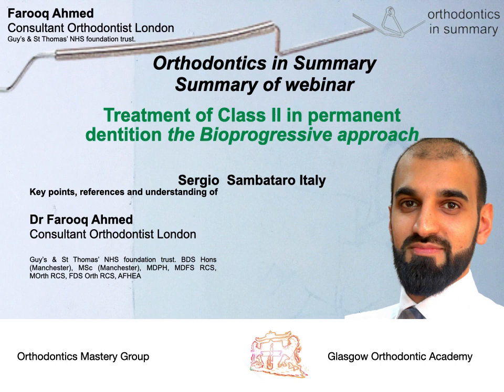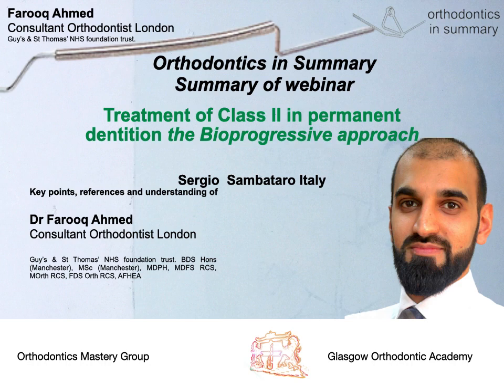Sergio started off by describing Ricketts' understanding of the Class 2 case. He described how the upper permanent molars are less erupted and the lower permanent molars are more erupted, and that formed a key part of Ricketts' understanding of the Class 2 case and also the bioprogressive technique. Sato's paper in 2008, which is in the references, also showed this. The occlusal plane in the Class 2 case has a higher posterior plane and lower anteriorly, and that features as a key objective in the bioprogressive technique.